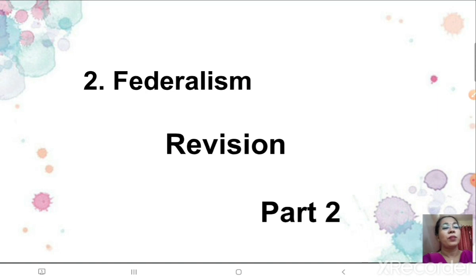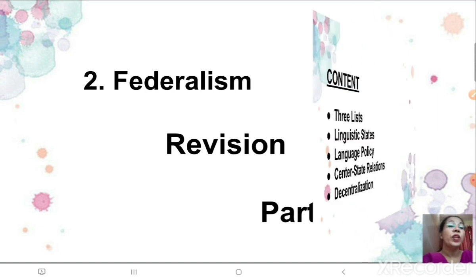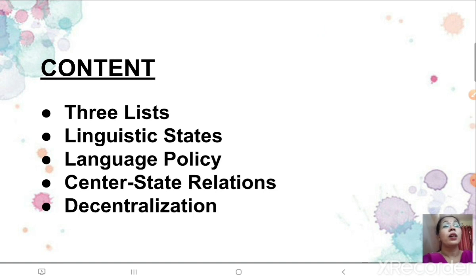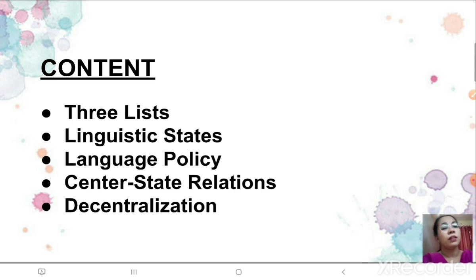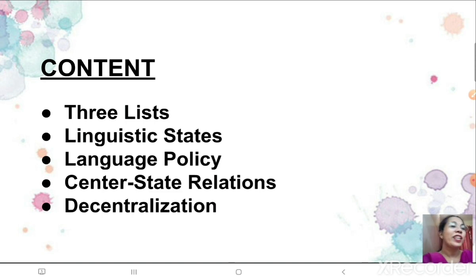Today in this part of our revision we will once again see what are the three-fold distributions of the legislative powers — the three lists which include the union list, state list, concurrent list, and the residual list which was introduced much later. Then we will understand about the linguistic states, language policies, center-state relations, and also about the decentralization of power in India, which is a must for a federal country. So let's begin.